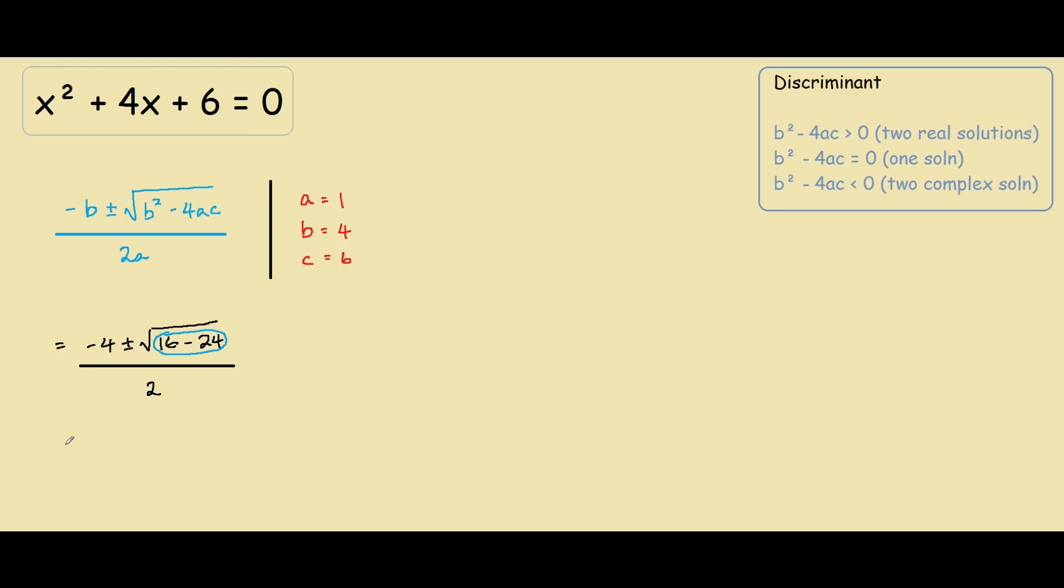So simplifying this down, we have negative 4 plus minus square root of negative 8. Square root of 8 is 2 times square root of 4. This is the same thing, square root of negative 1 is i, all over 2. So we have negative 4 plus minus square root of 4 is 2, so 2 times square root of 2i.